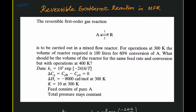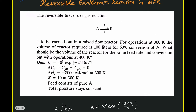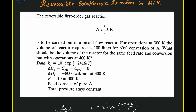We are given rate constant data as a function of temperature. The Cp of feed and product are the same, and delta H (heat of reaction) is given at one temperature. K is given at one temperature, the feed is pure A with no R present, and total pressure stays constant. Let us try to find the volume of reactor for operation at 400 Kelvin based on the data available at 300 Kelvin.